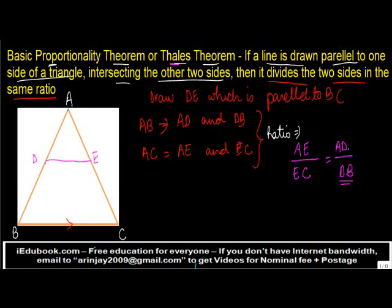So what we need to prove is that the ratio AD:DB equals the ratio AE:EC. To do this, I draw one line perpendicular from E to AB and call this point F. Similarly, I draw a line from point D to AC and call this point G. At the same time, I connect point D with point C and connect point E with point B.